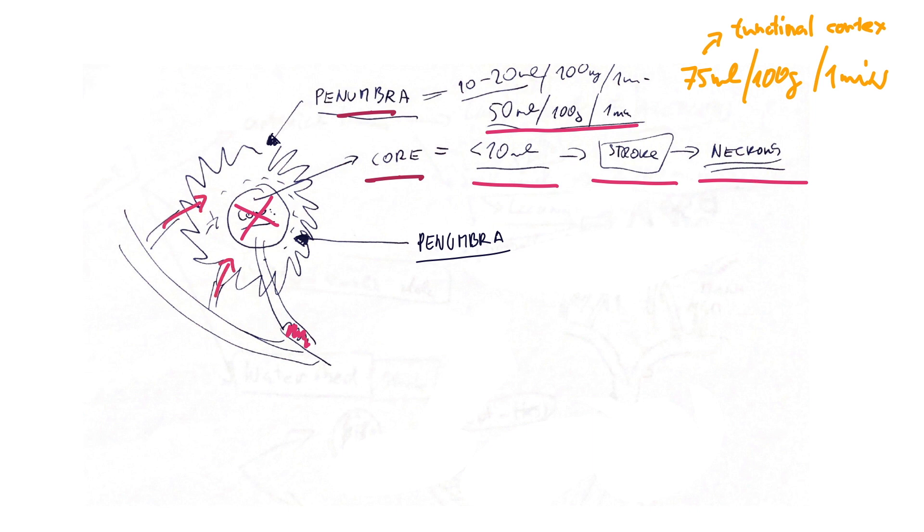These cells are supplied from other vessels as well. Of course they're far from the occluded vessel, so they get some supply but not too well. This is what you're fighting for—you want to save as many neurons in this penumbra zone. Penumbra is like between 10 and 20 milliliters perfusion.